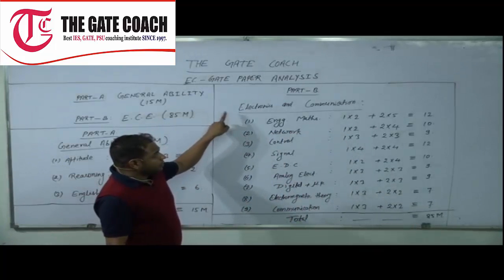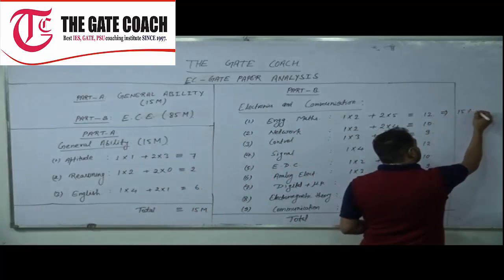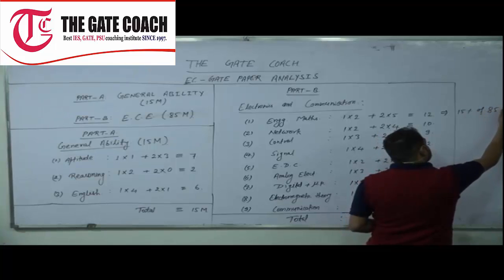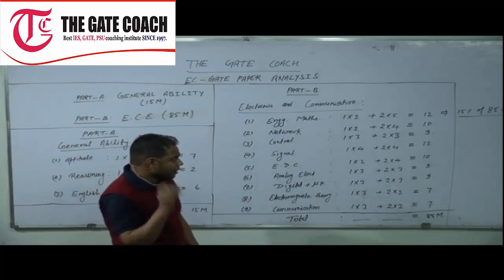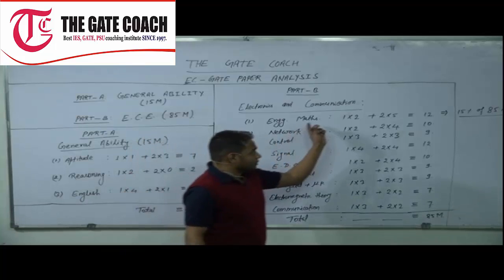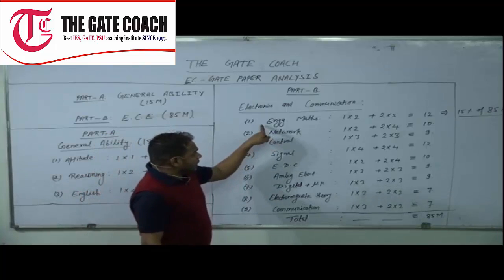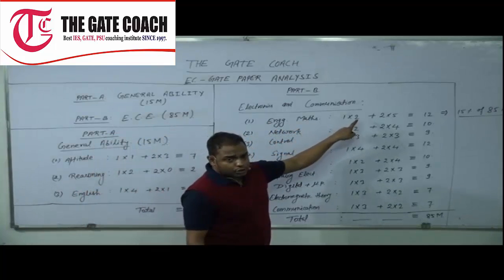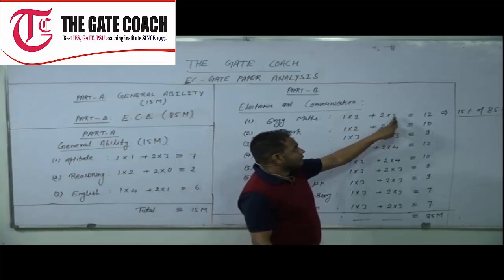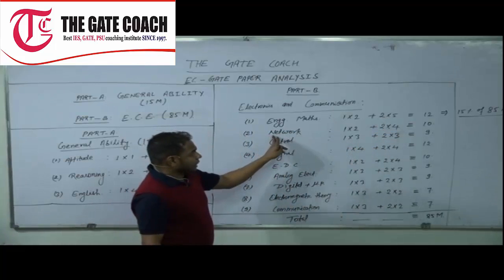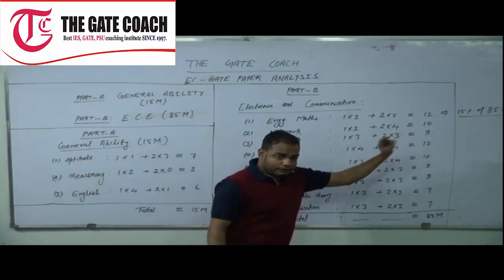Engineering mathematics has around 15 percent of the 85 marks, which is around 12 to 13 marks. On average, 12 mark questions are being asked from engineering mathematics — expect 2 one-mark questions and 5 two-mark questions. Similarly, for network theory, expect 2 one-mark questions and 4 two-mark questions, totaling 10 marks.